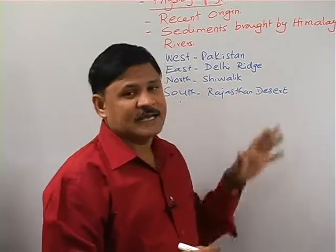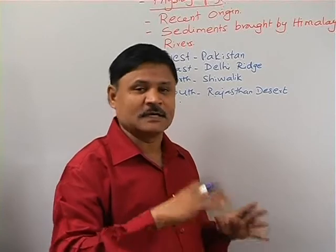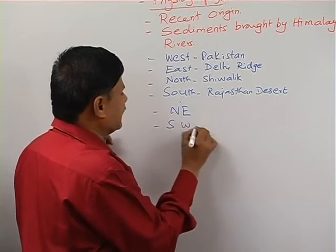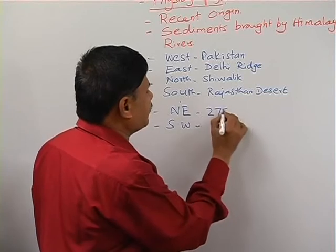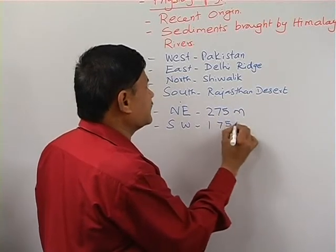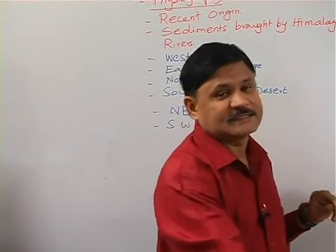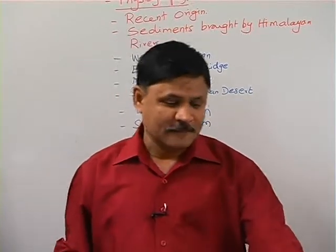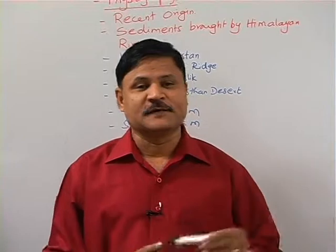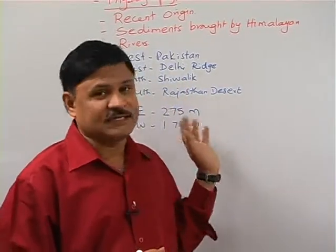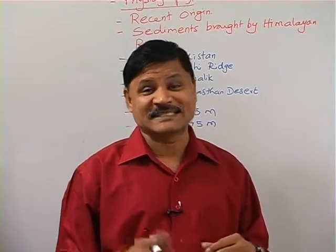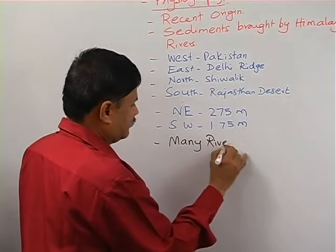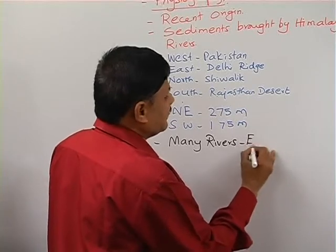This plain is tilted towards the south, so the height in the northeast is more and in the southwest it is less. In the northeast the height is 275 meters, and in the south it is 175 meters — so it slopes towards the southwestern part. Many rivers have contributed to soil deposition in this region, and as a result this region has extensive canal irrigation.